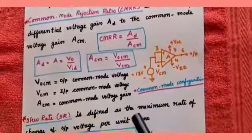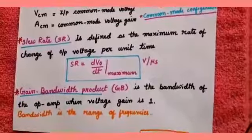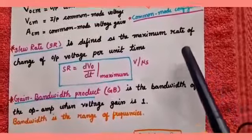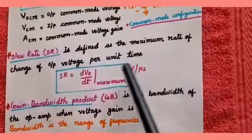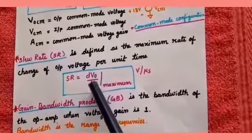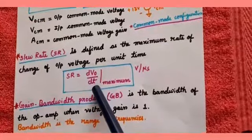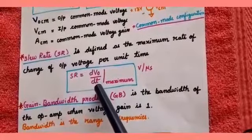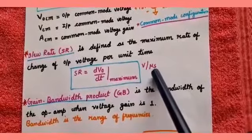CMRR is a very important parameter. The next characteristic is slew rate. Slew rate is defined as the maximum rate of change of output voltage per unit time. Symbolically it is written as SR. SR equals dVo by dT. The unit of slew rate is volts per microsecond.